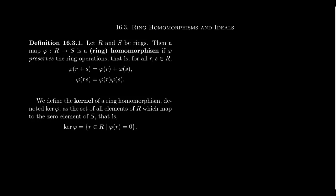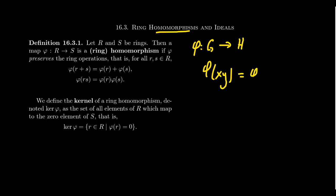If you've been following along with this lecture series, then we've already talked about the idea of a group homomorphism. Remember, if we have two groups, say G maps into H, and we have some map phi, the homomorphic property takes two elements of G, say x and y, and their product put inside phi will be equivalent to phi of x times phi of y. That is to say, for a group homomorphism, the homomorphism preserves the group operation — a product before the function is equal to the product after the function.